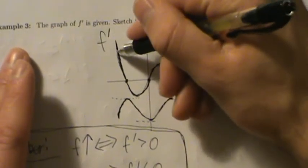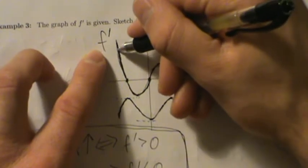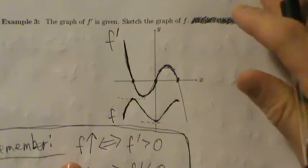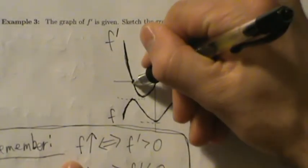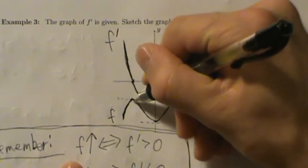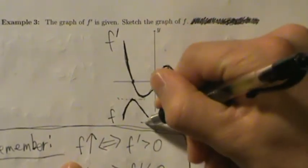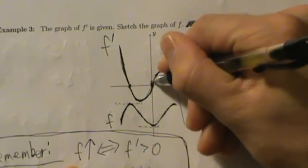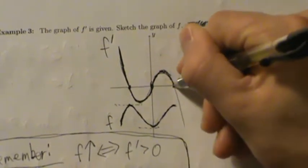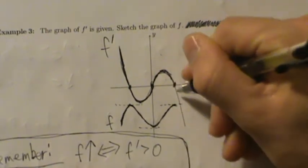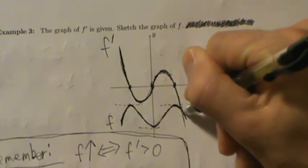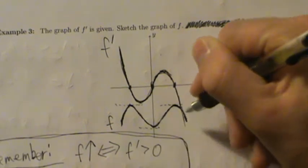So just to recap: f' is positive, so f is increasing. Then f' is 0, so there's a horizontal tangent line on f. f' is negative, so f decreases. f' is 0, so f has a horizontal tangent line. f' is positive, so f increases. f' is 0, so f has a horizontal tangent line. And then f' is negative, so f decreases. We just stop there because we don't really know what's happening beyond that.